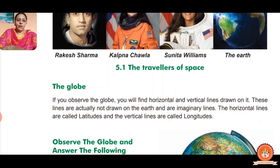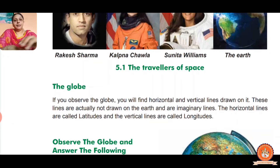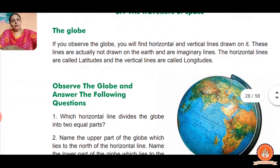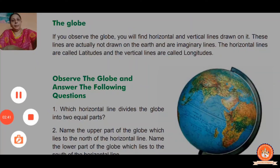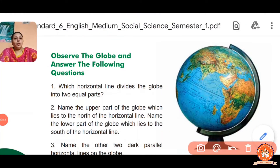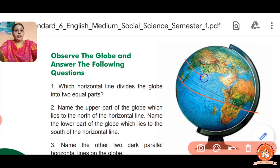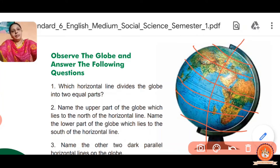The globe — what does globe mean? If you observe the globe, you will find horizontal and vertical imaginary lines drawn on it. These are imaginary lines on the globe.